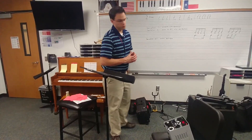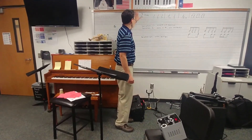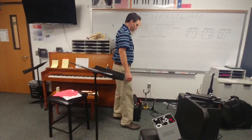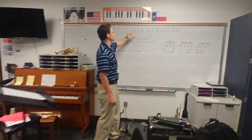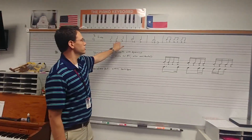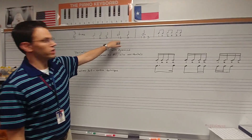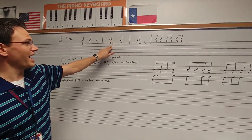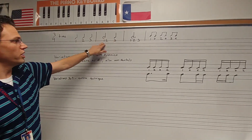The time signature for the piece is three-four time, and so that means there are going to be three beats per measure. We could have three quarter notes — one, two, three — or we could start, as you'll see, the first measure of it is a half note with a quarter note.